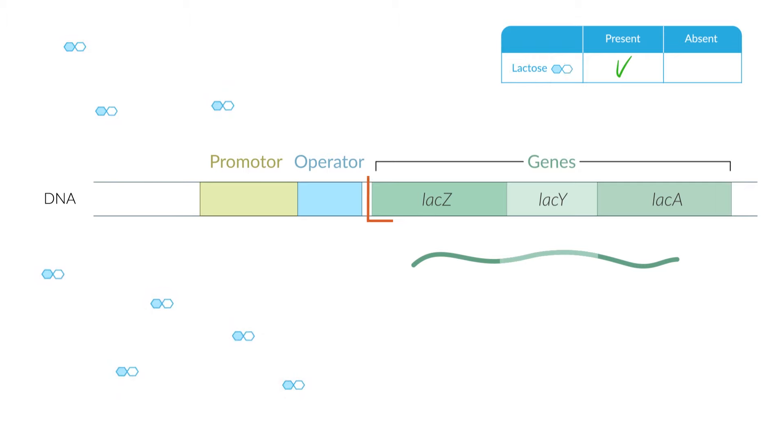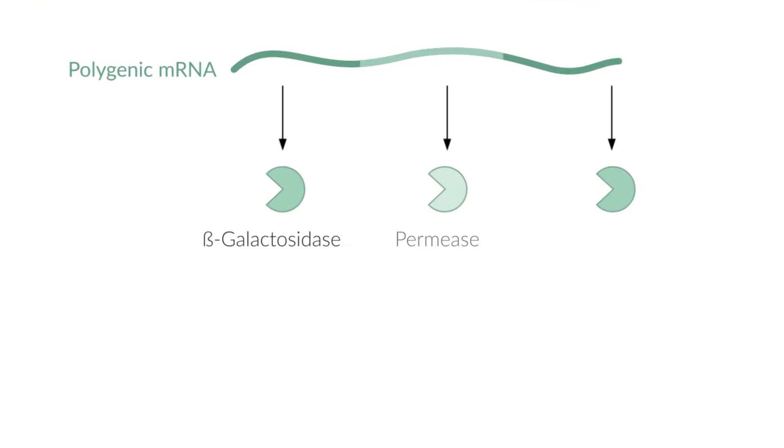The three genes, LACZ, LACY, and LACA, are now transcribed together as a polygenic mRNA. Three different proteins are synthesized on this mRNA, namely beta-galactosidase, permease, and transacetylase. These proteins are essential to lactose metabolism.